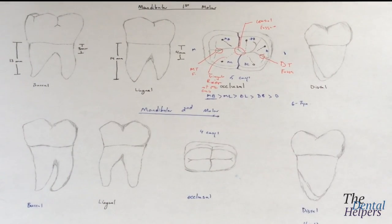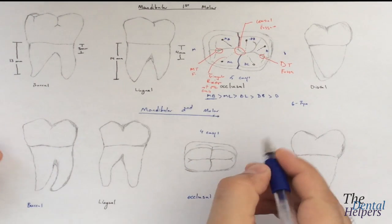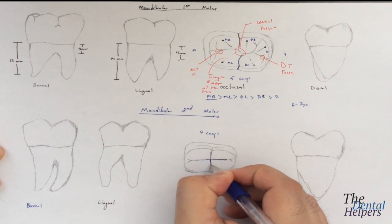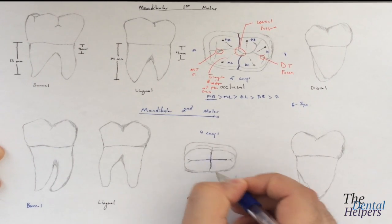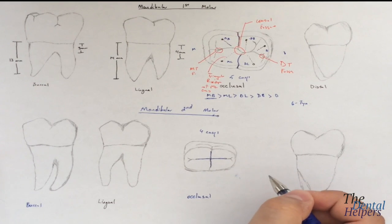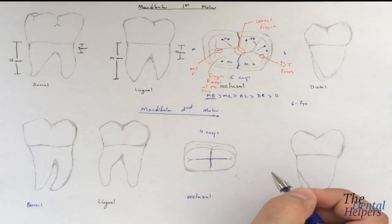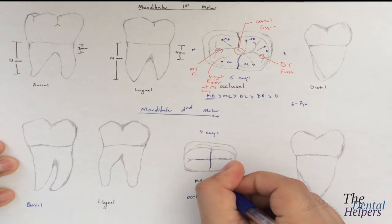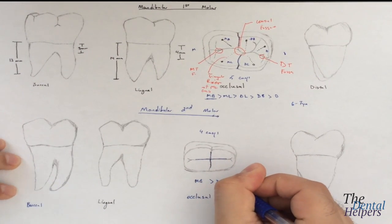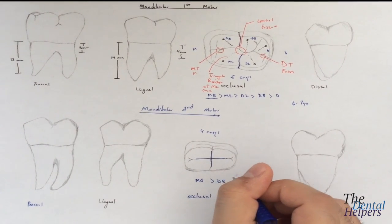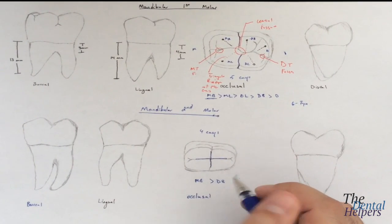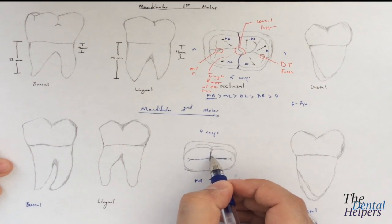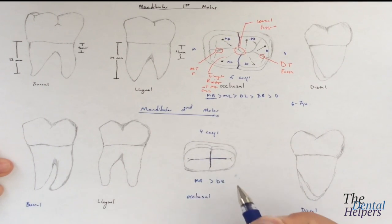If we look at the mandibular seconds, the key giveaway is that it looks like a cross. So if you're looking at this tooth and you see a cross or a T, just know that this is the mandibular second tooth. Also, the mesial buccal is going to be bigger than the distal buccal. In terms of the grooves, we have the central groove down the center, and we're going to have the buccal and the lingual groove as well.